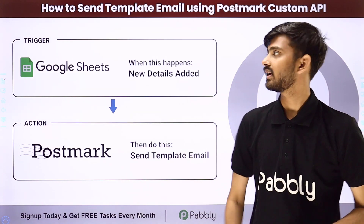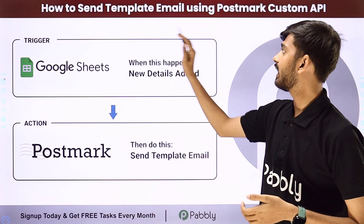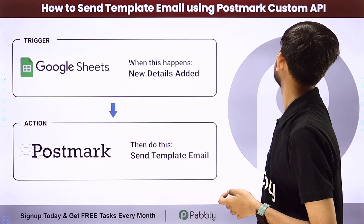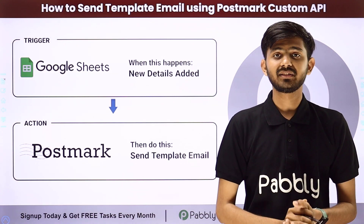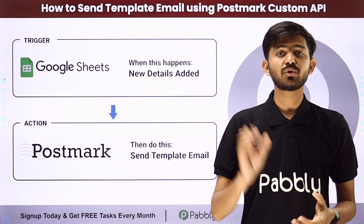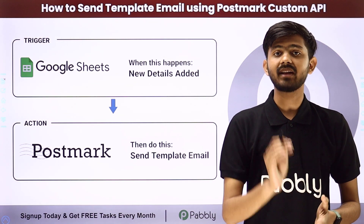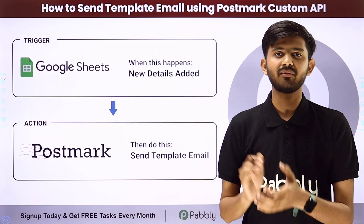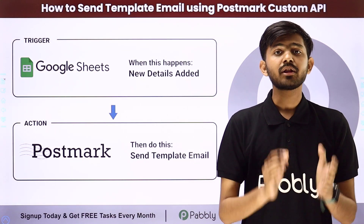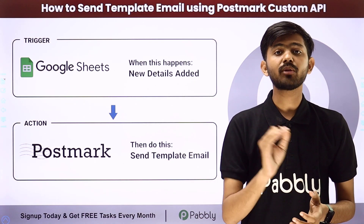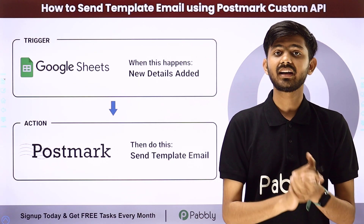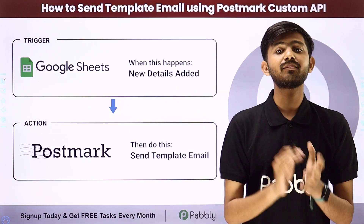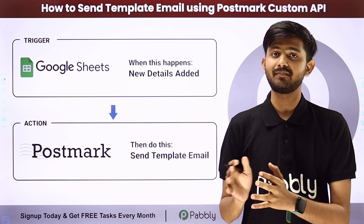Hello everyone. Today our topic is how to send template email using Postmark custom API. My objective is that in my Google Sheet, I'm going to add the details of my customer like the email address or the name. Whenever I add these details, I want to automatically send a template email to that particular customer by using Postmark custom API.